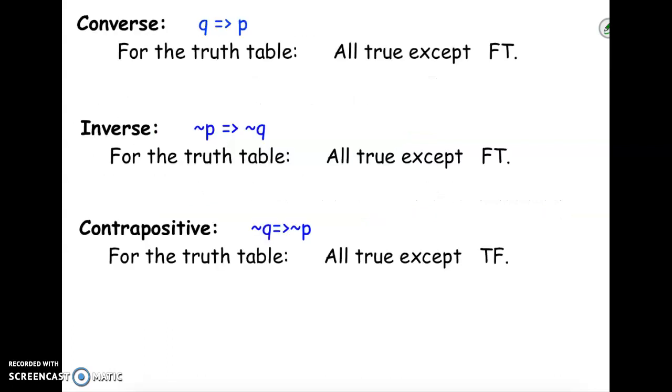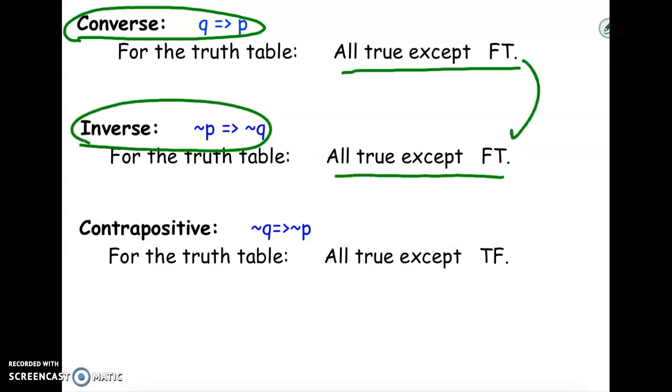So I did create this helpful guide for you for the three types: converse, inverse, and contrapositive. Here are the symbols. So for converse, the helpful guide to when it's true is when we have everything except for the false, then the true. For the converse, here's your symbol, and then it's your help. These two are the same.